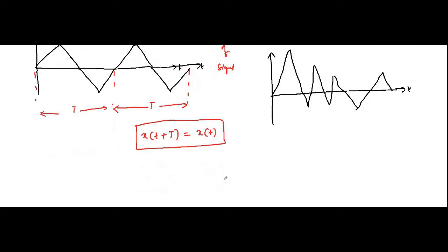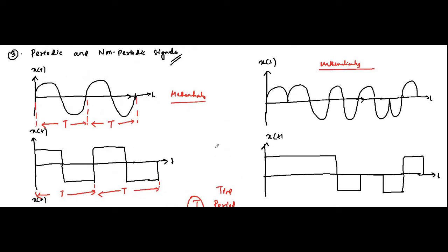The smallest possible value of T is called the fundamental time period. For example, taking a sine signal: here it is 0, here it is π, here it is 2π — so it repeats itself at 2π, then at 4π, 6π, 8π, 10π, and so on — at π multiplied by an even integer. The smallest possible value, when n equals 1, gives 2π. That is the fundamental time period.